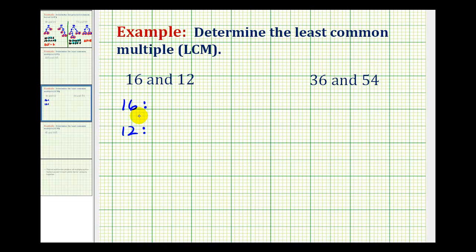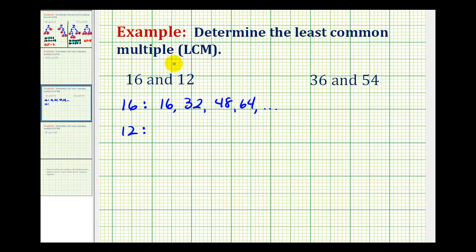To list multiples of 16, we'll start by counting by 16s. So 16, plus 16 would be 32, plus 16 would be 48, plus 16 would be 64, and so on. One of the challenges about listing multiples of each number is that we're not really sure when to stop.